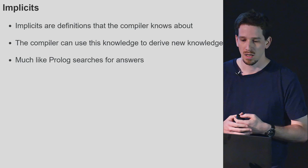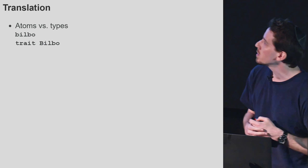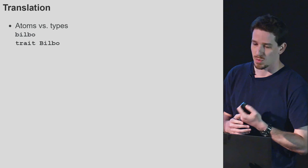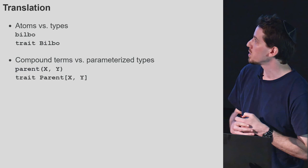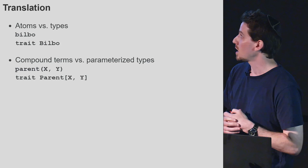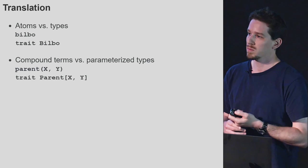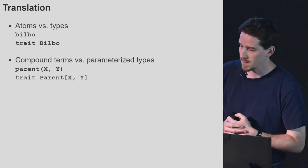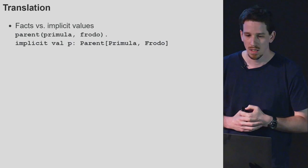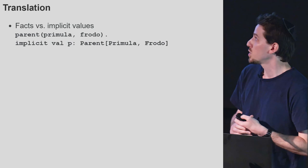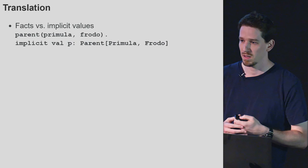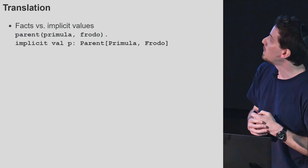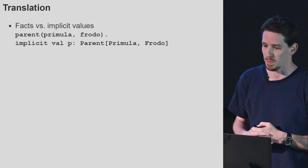To make the analogy more concrete, let's try to translate between the two. Prolog atoms become simple Scala types — an atom becomes just a trait. Compound terms that take arguments, like the parent relationship, become compound Scala types — types that take type arguments themselves. So if a Prolog program runs over Prolog values, a Scala logic program will run over types. We're aiming at logic programming over the type system. A fact becomes an implicit definition, because anything declared as implicit becomes known to the compiler, just like the Prolog knowledge base.